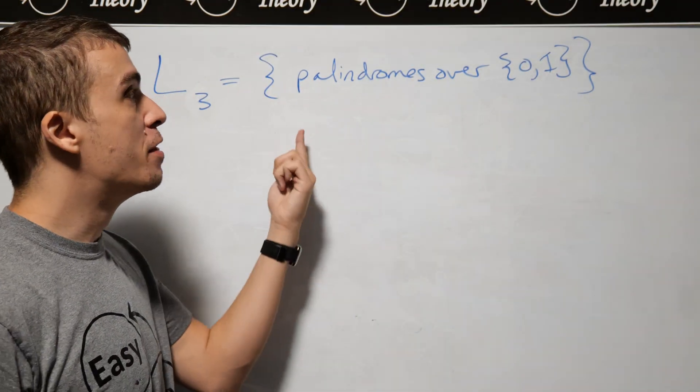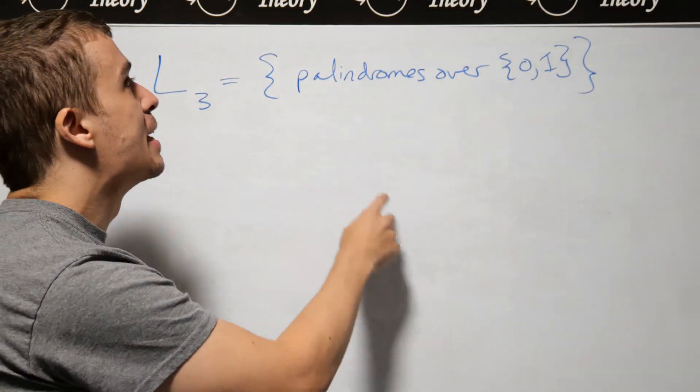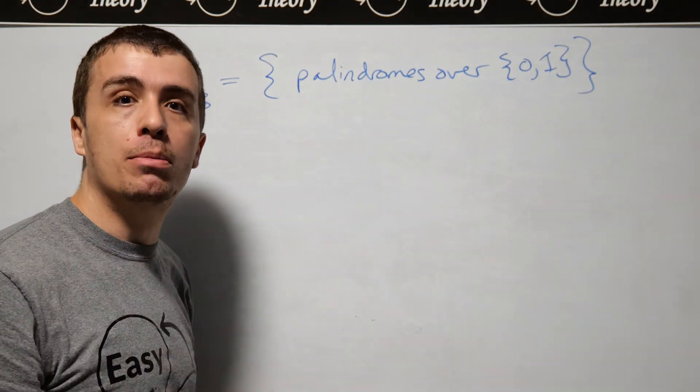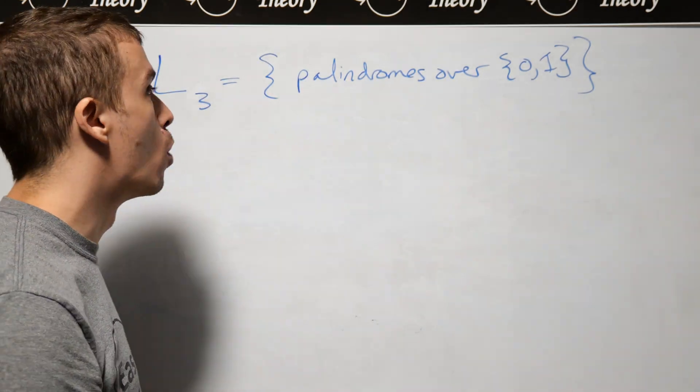Let's make a context-free grammar for this language, which I'm informally writing as the set of palindromes over the alphabet 0 and 1.